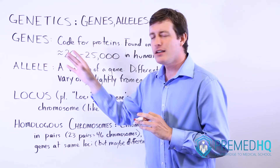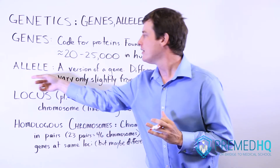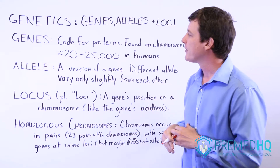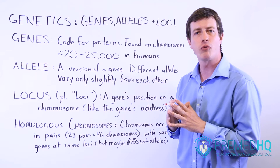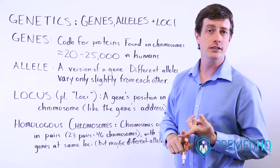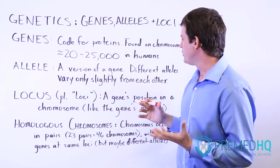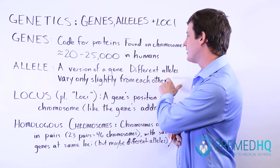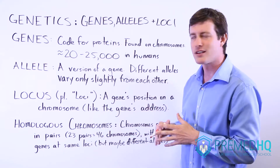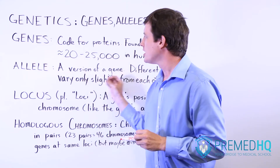A gene is a particular region of the chromosome that encodes for a trait, but genes can come in several different alleles. Everybody has the same genes but we have different alleles for those genes. An allele is a version of that gene — going back to the flower example, you could have the flower petal gene with a red allele and a white allele. Usually the different alleles vary only slightly from each other; they're nearly identical but have some subtle variations that cause them to present differently. So an allele is simply a version of a gene.